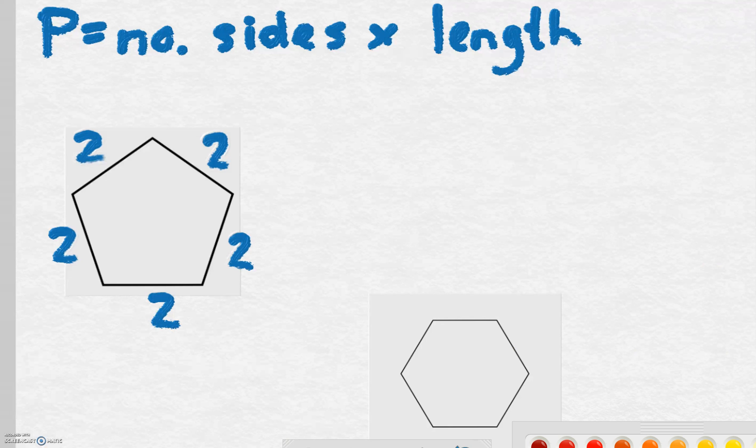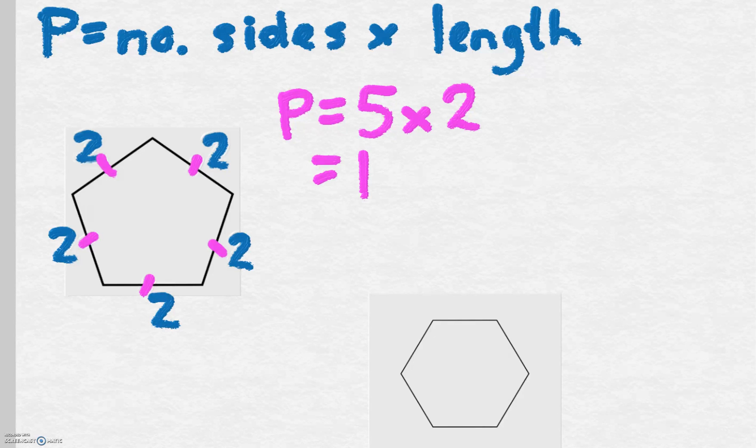Okay, so if I look at this pentagon, P equals how many sides? One, two, three, four, five. The number of sides times the length of the side times two equals ten.